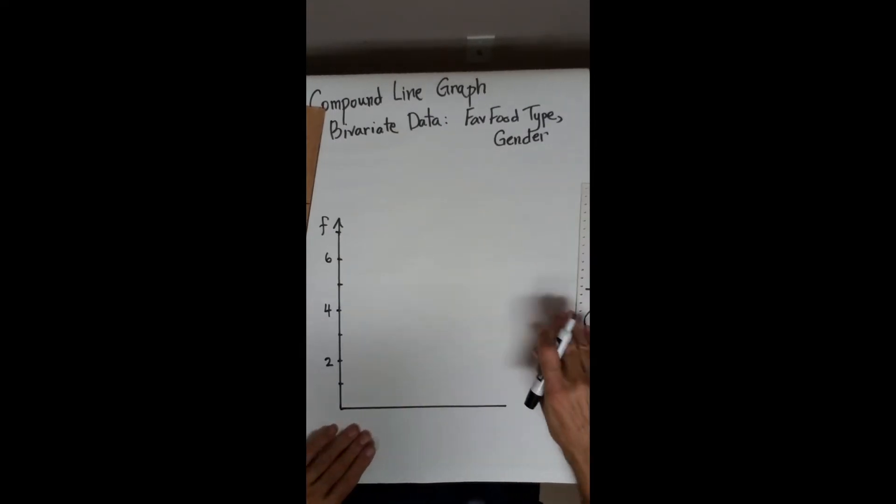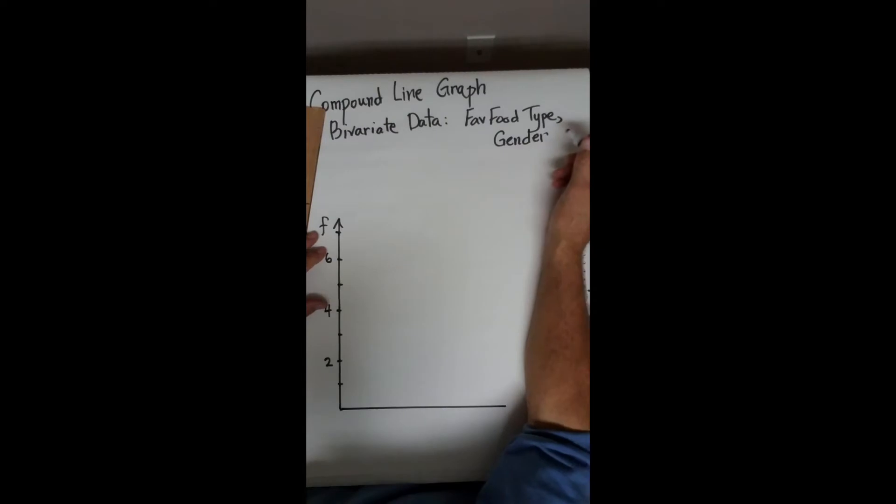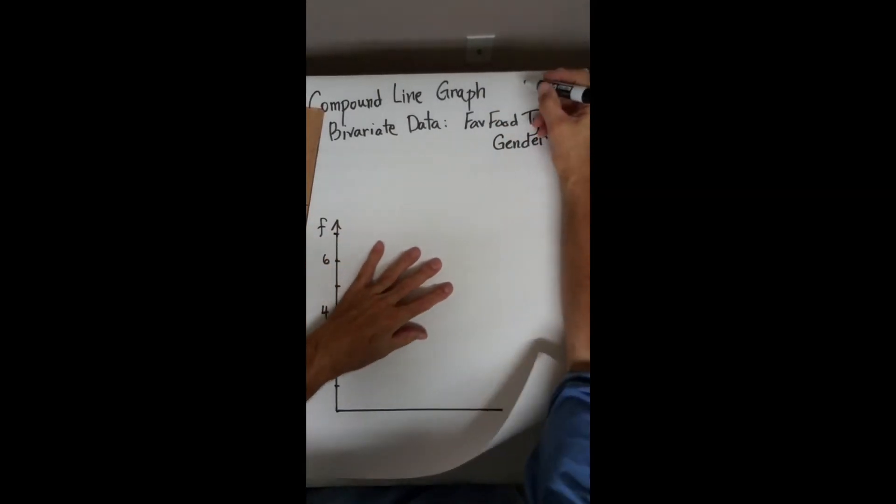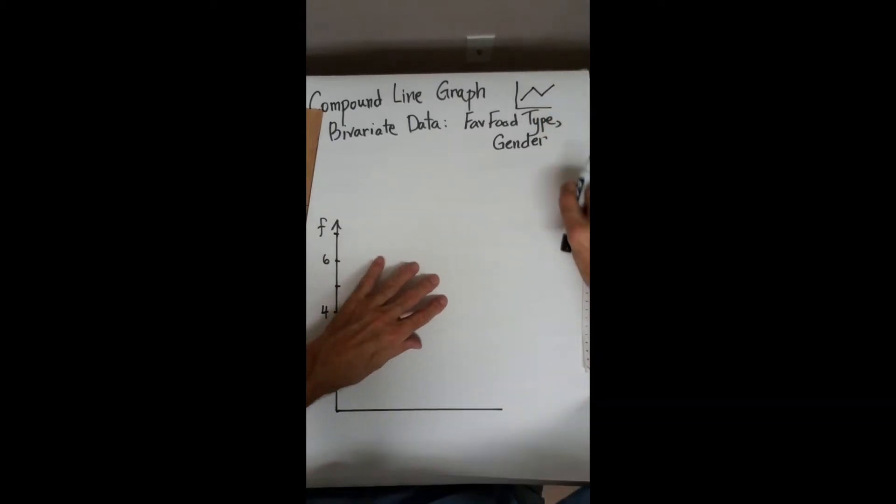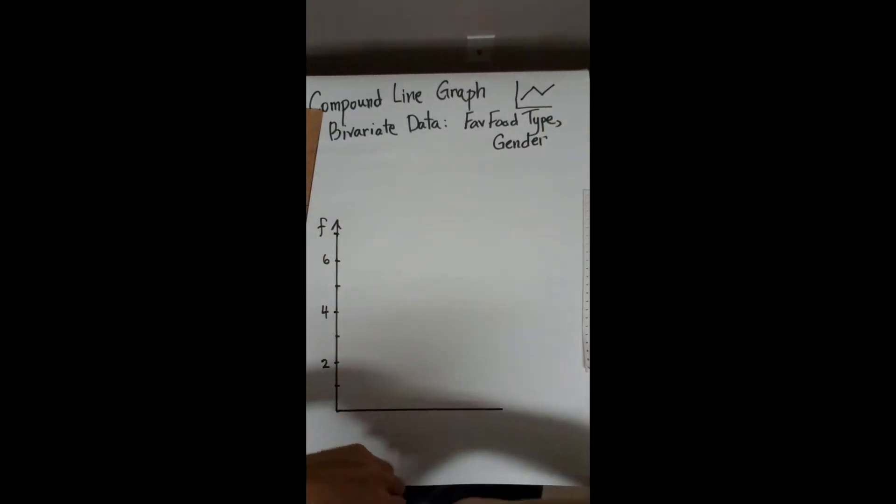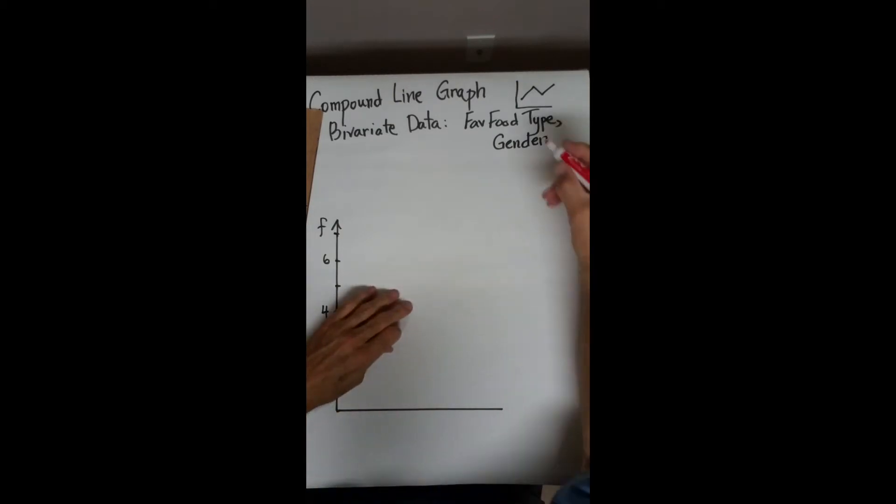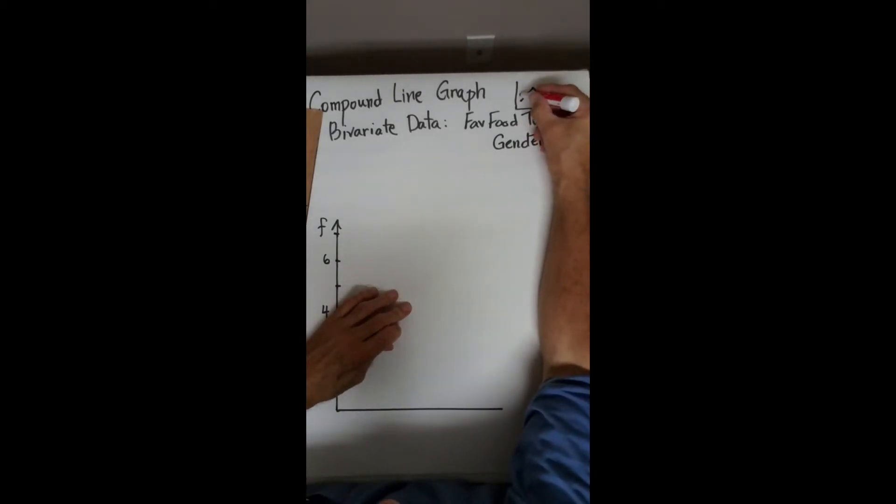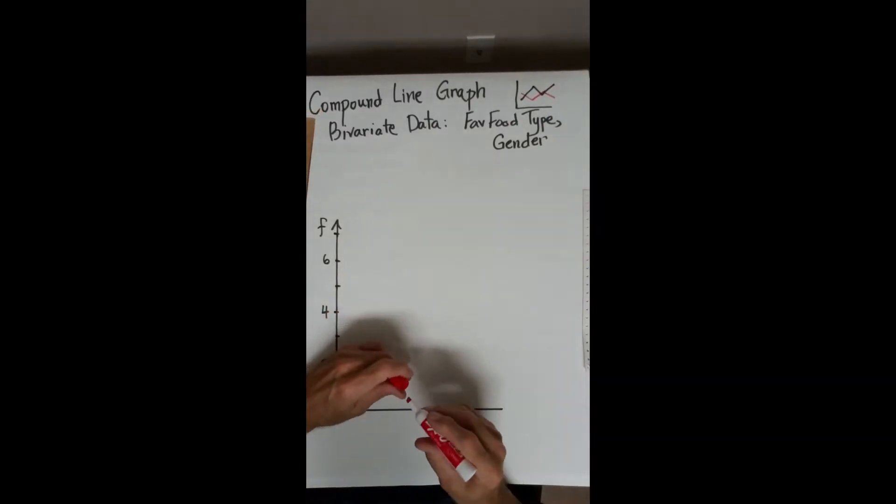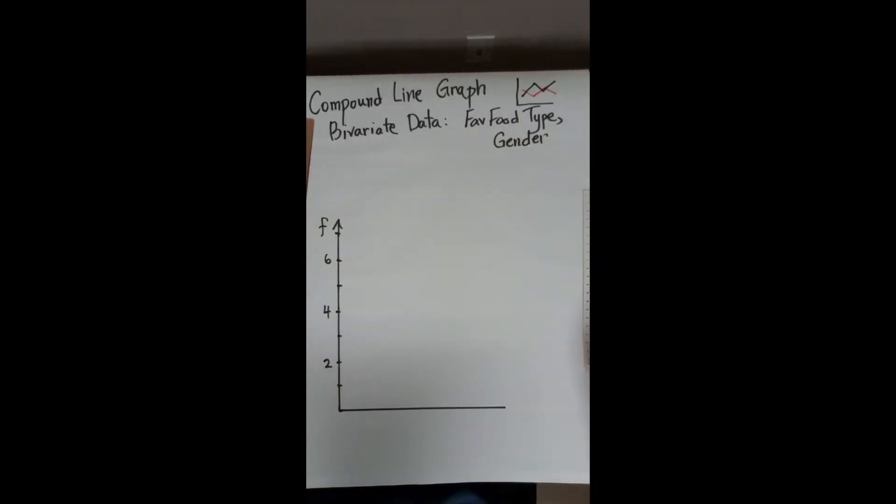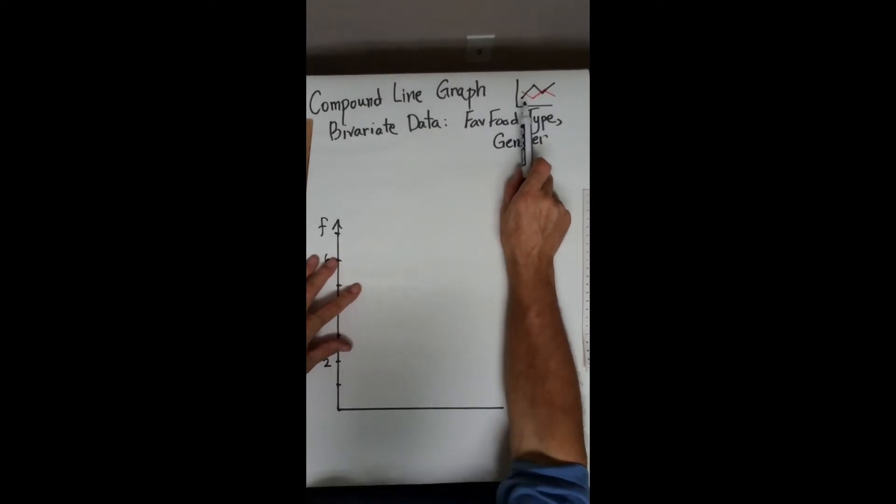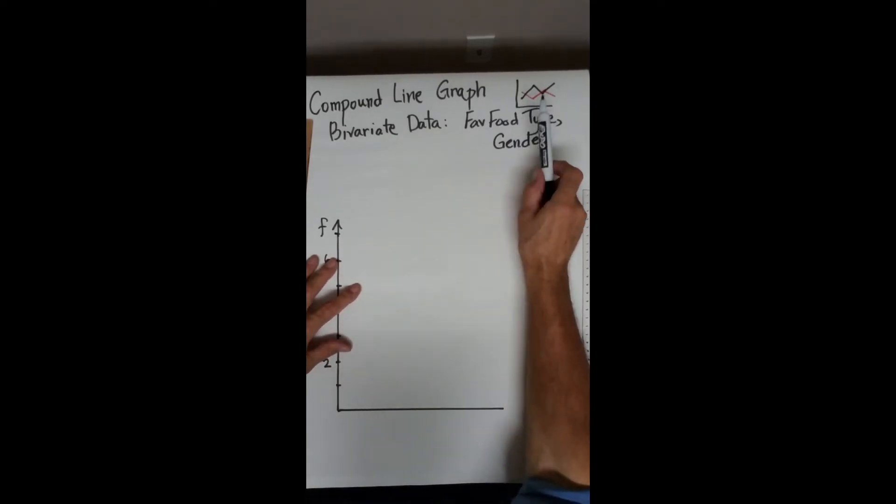So we're going to end up, the graph we're going to draw is we're going to have Chinese, American, Mexican, Italian. We're going to have one graph for females and then another graph overlaid on top of that for males. We're going to use two lines, but we're going to have four references along the bottom edge.